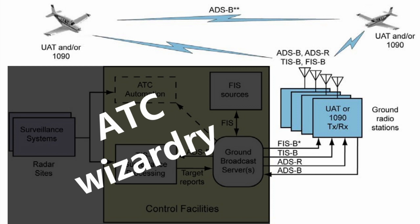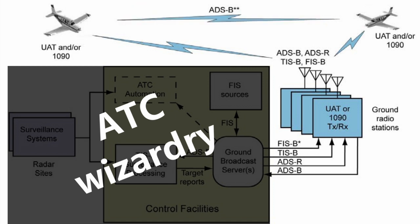In a nutshell, ground stations communicate directly with aircraft, while aircraft can communicate with each other. The information transmitted and received by ADS-B includes tail number, aircraft type, GPS-enhanced ground speed, direction, altitude, and route — and all of this information is reported every second. Whereas traditional radar only provides a fraction of this information and is only transmitted every 5 to 12 seconds.